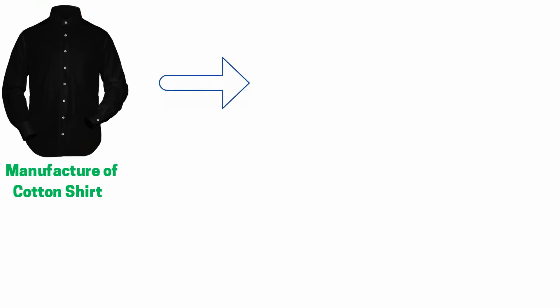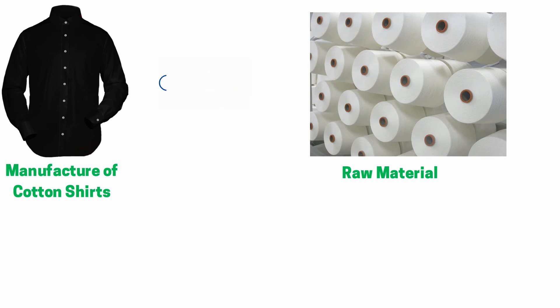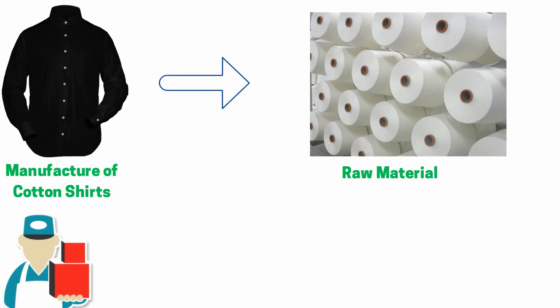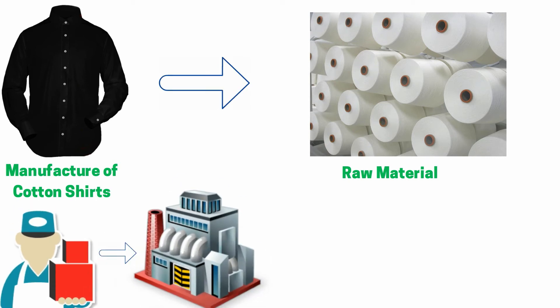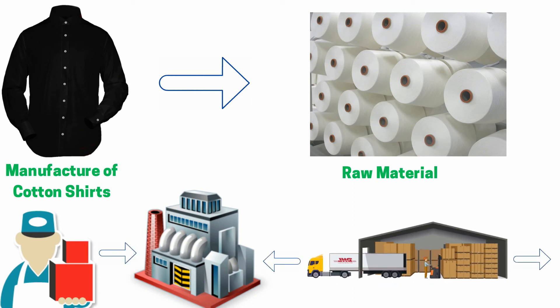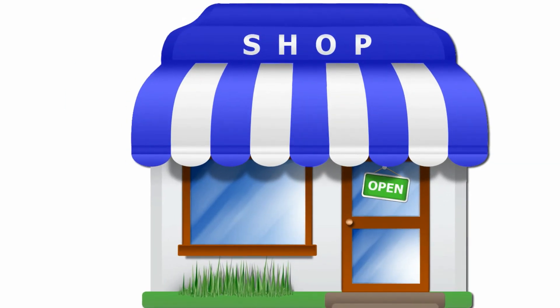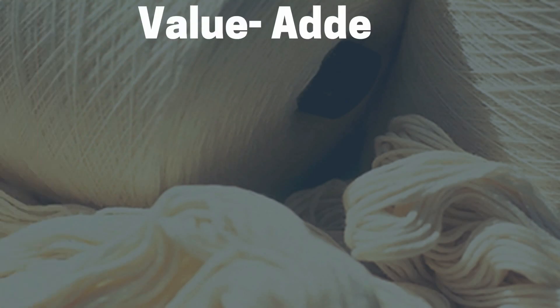For explanation purposes, let's take the example of a manufacturer of cotton shirts. Initially, the manufacturer bought the raw material, which was transferred from the supplier to the manufacturer. The manufactured goods were then transferred to the wholesaler, who then supplied the goods to the retailer or the final consumer. On every such occasion of transfer of goods, GST will be levied.